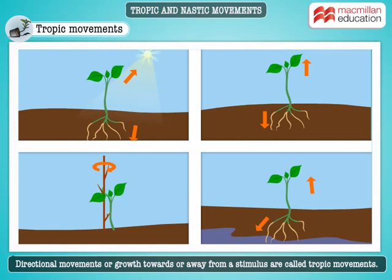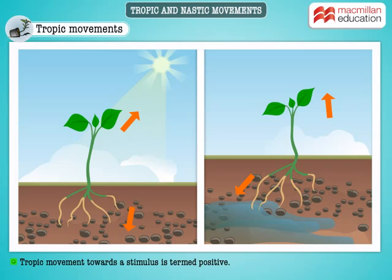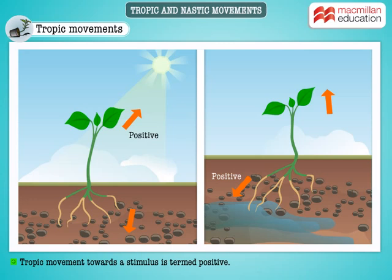Directional movements or growth towards or away from a stimulus are called tropic movements. A tropic movement towards a stimulus is termed positive, while a tropic movement away from a stimulus is termed negative.